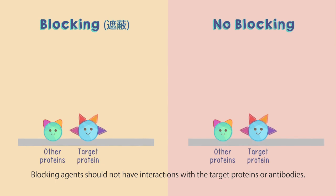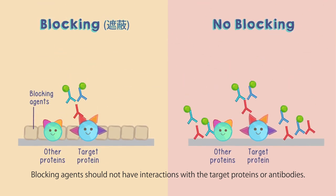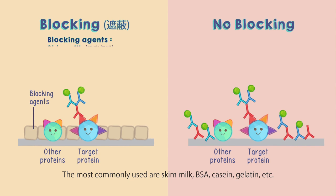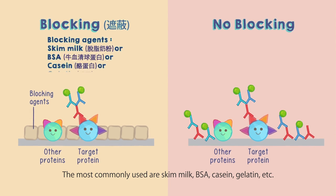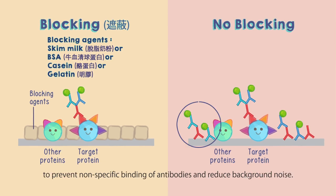Blocking agents should not have interactions with the target proteins or antibodies. The most commonly used are skim milk, BSA, casein, gelatin, etc. They can block all unoccupied sites on the membrane to prevent non-specific binding of antibodies and reduce background noise.